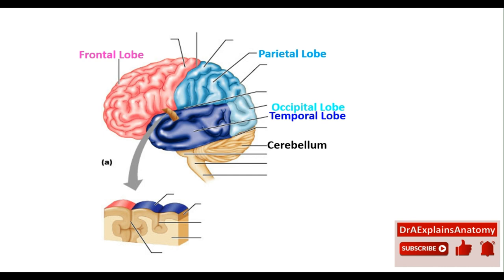This structure is the cerebellum. This is the pons. And this right here is the medulla oblongata. This is the spinal cord. Don't confuse the cerebrum with the cerebellum — this is the cerebrum, and this is the cerebellum.